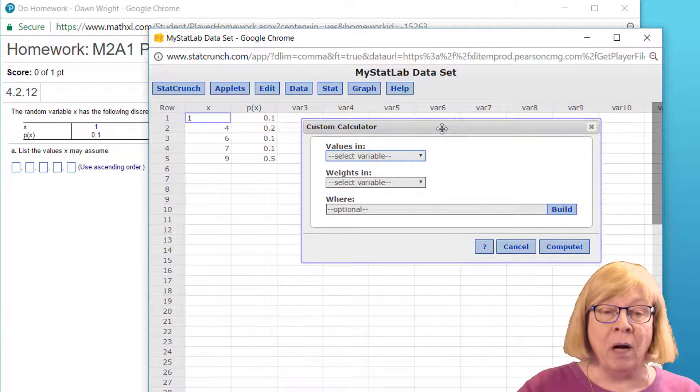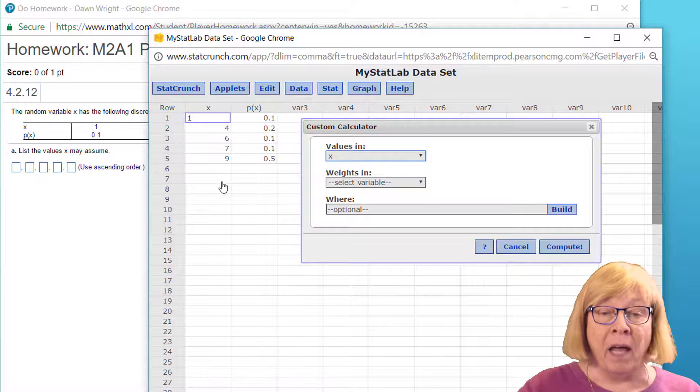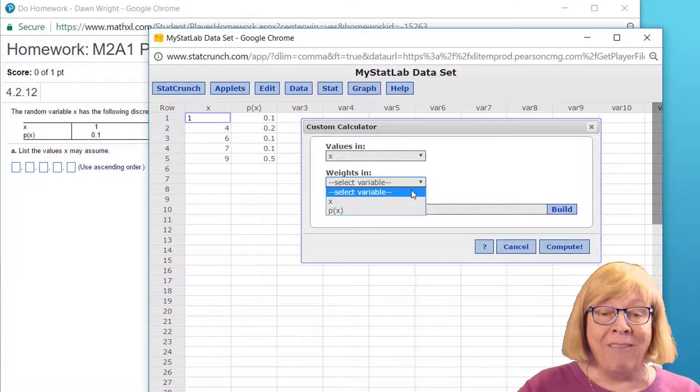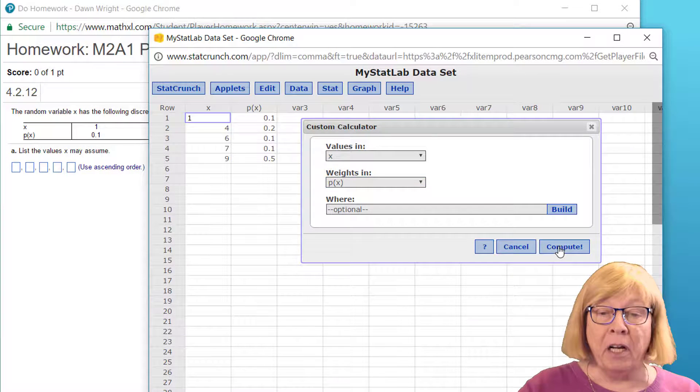And for these types of problems, it's really very helpful. We're going to create a custom calculator, the values of the variable X, it's in the column label X, the weights or the probabilities are in the column label P of X, and we just click on Compute.